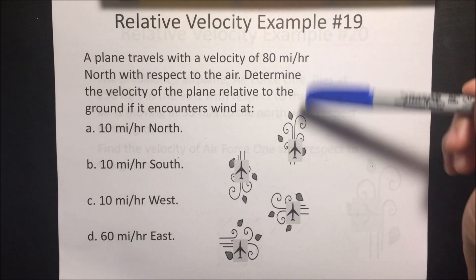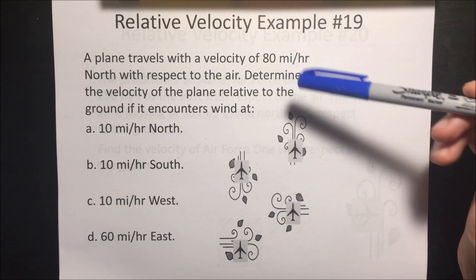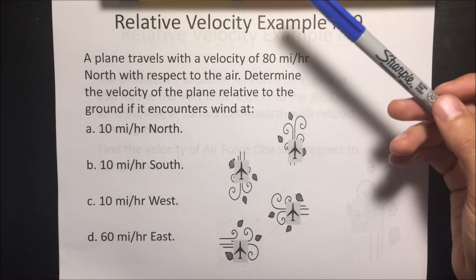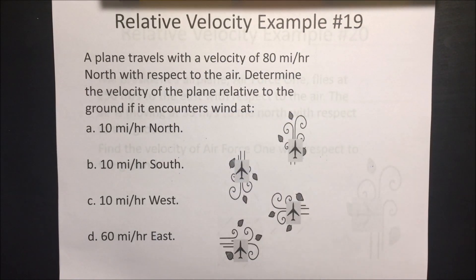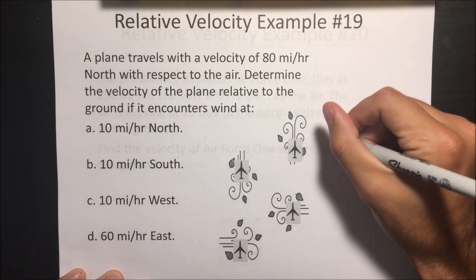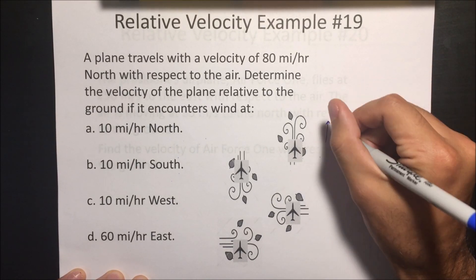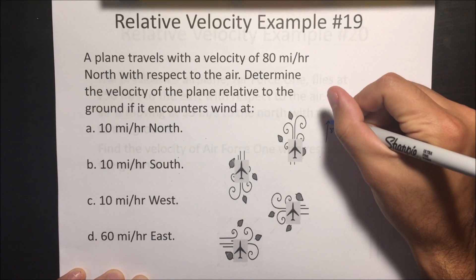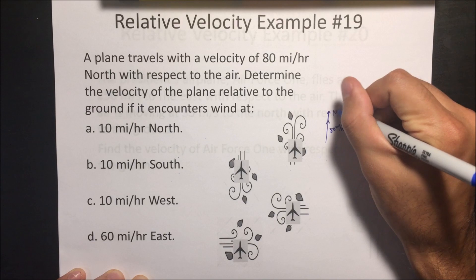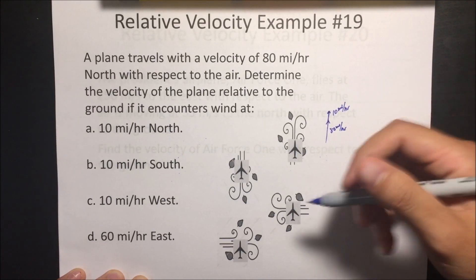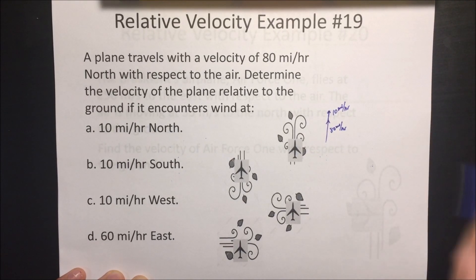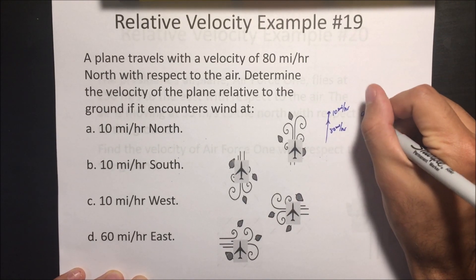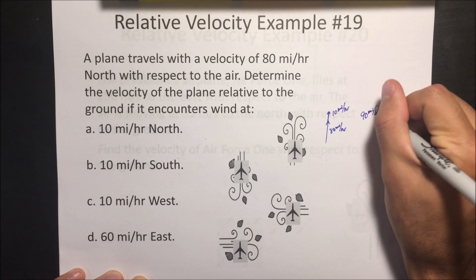A plane travels with a velocity of 80 miles an hour north with respect to the air. Determine the velocity of the plane relative to the ground if it encounters wind at 10 miles an hour north. Since the plane is going 80 miles an hour and the wind comes up and pushes it another 10 miles an hour in the same direction, it's going to be going even faster — the plane gets a boost from the wind going 90 miles an hour north.